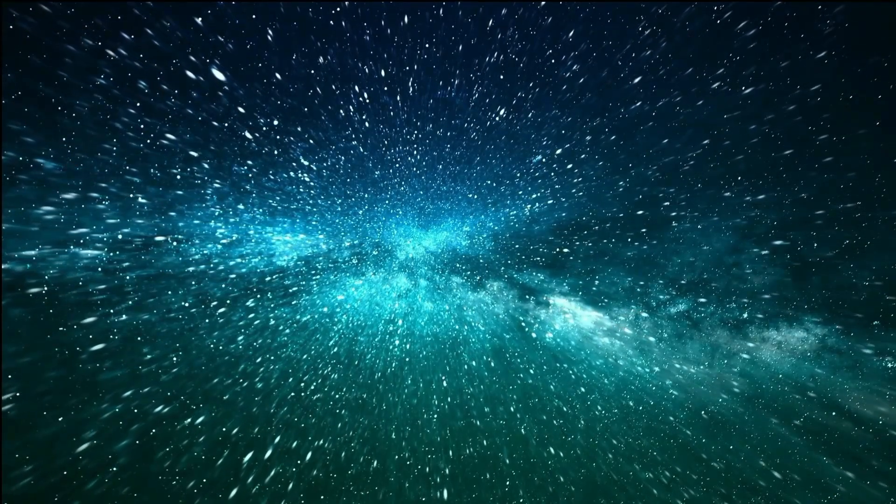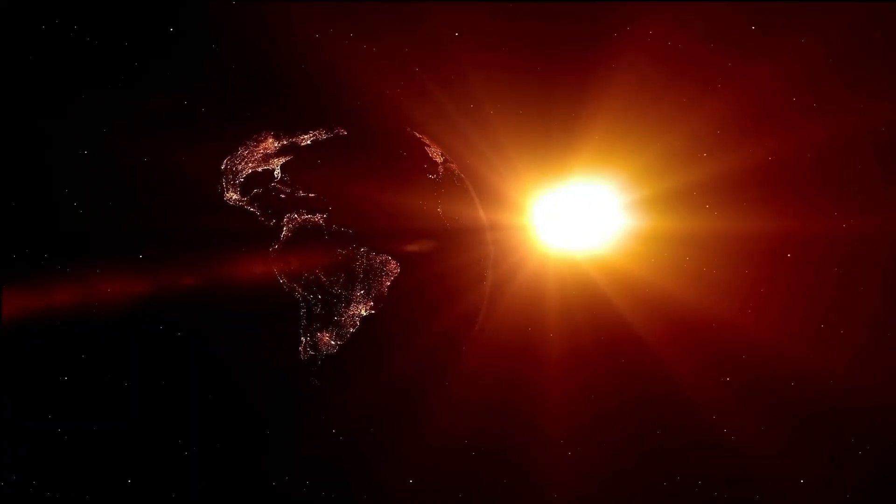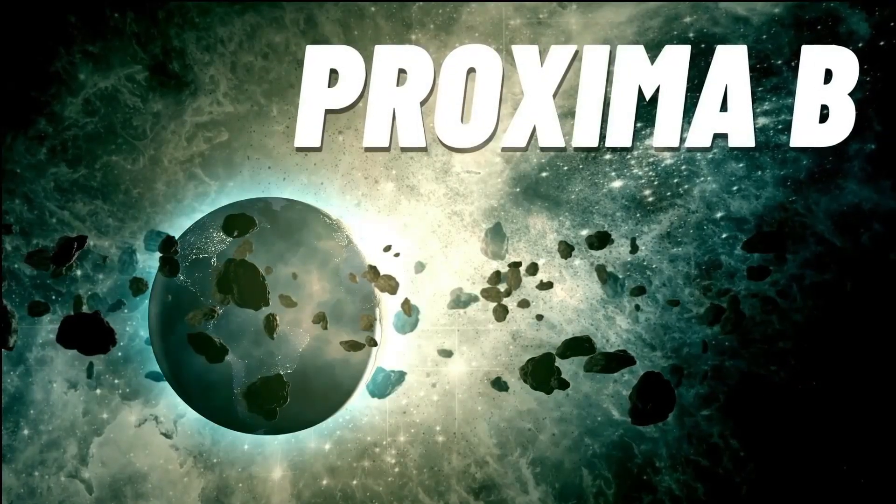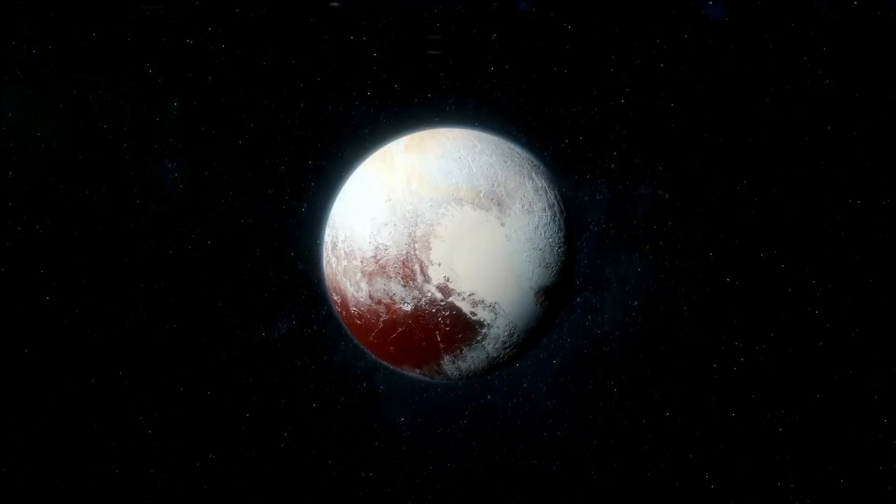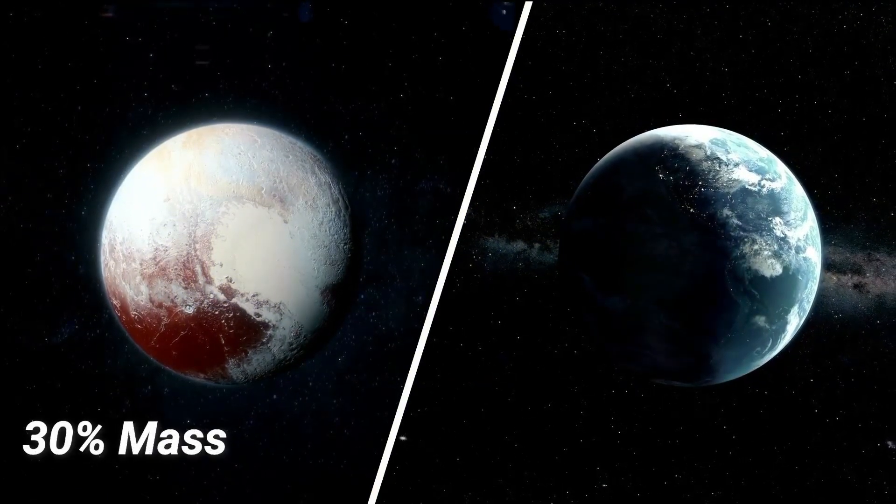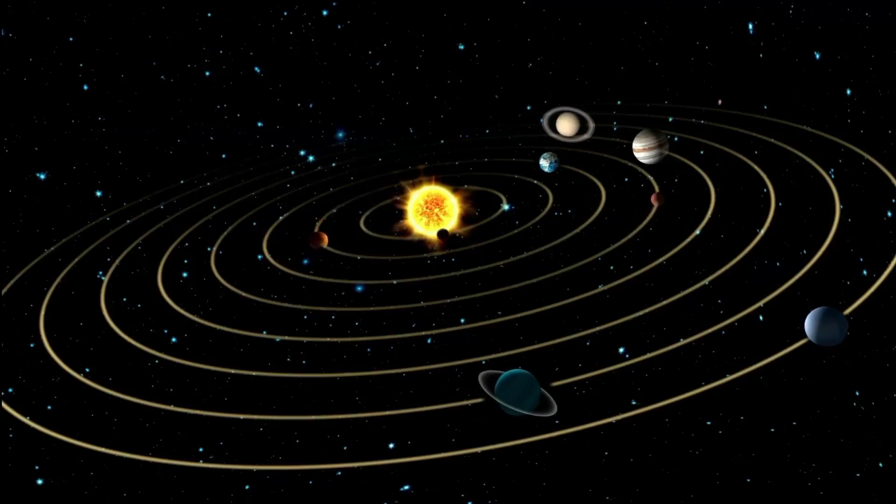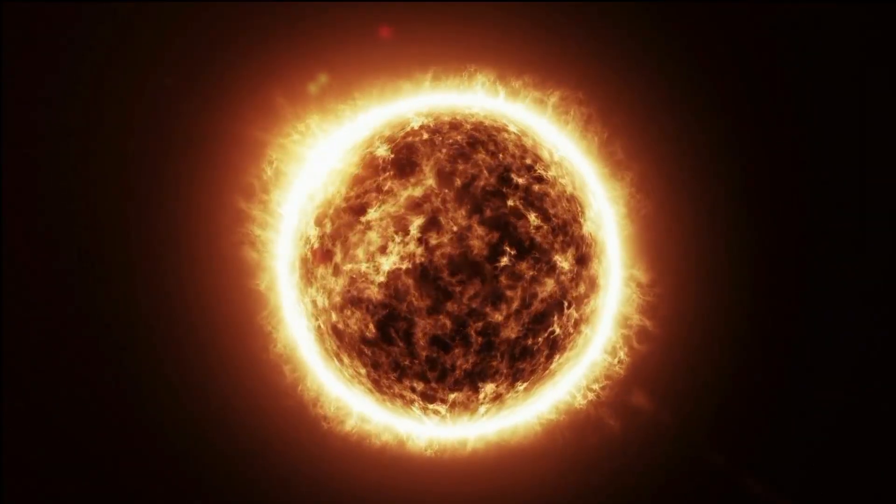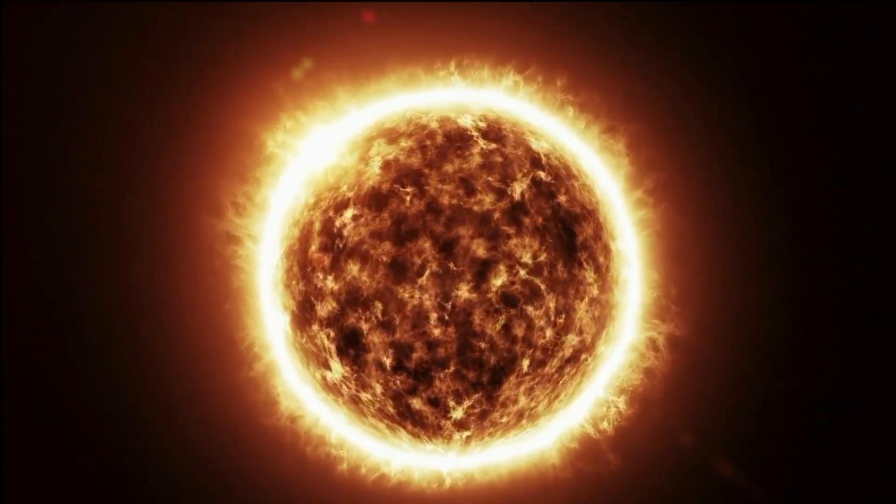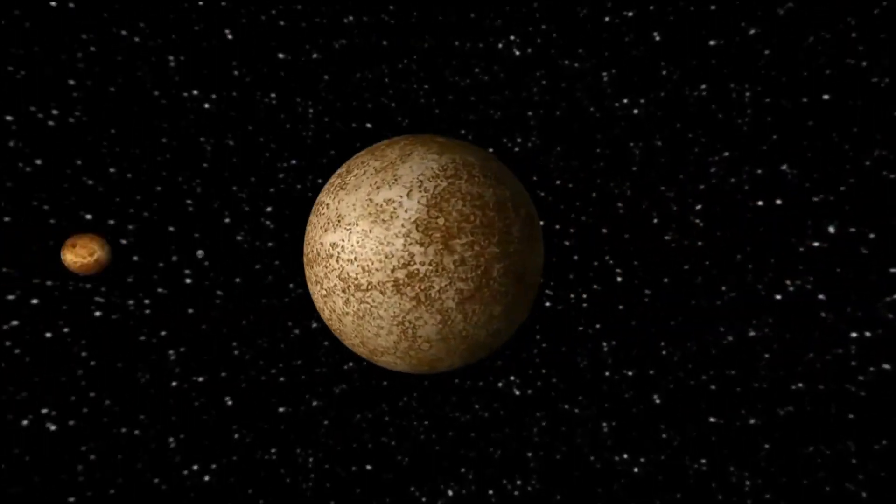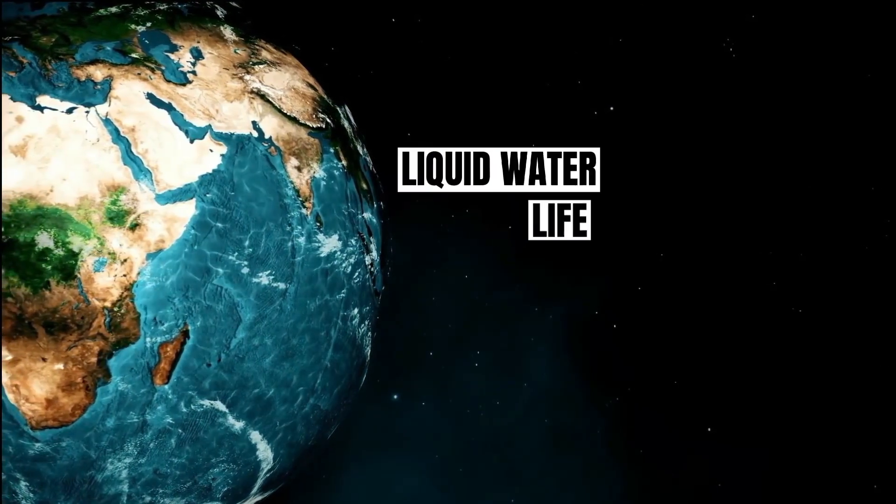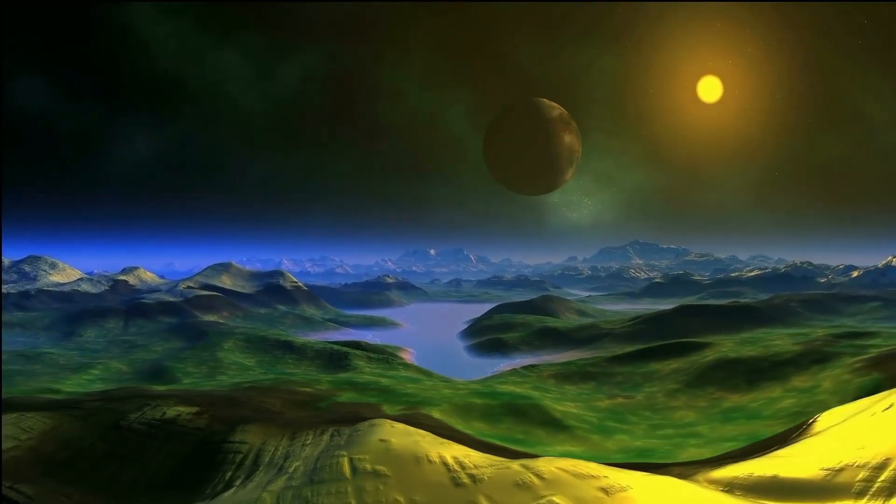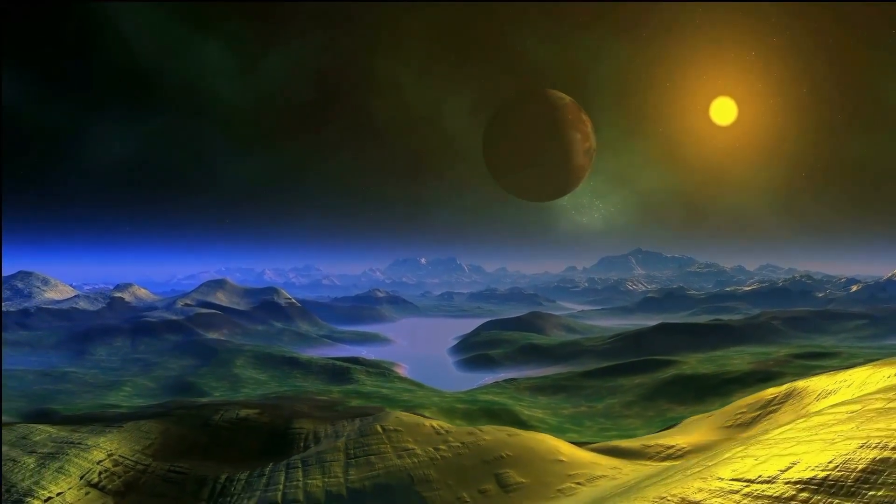Now, let's have a look at the very first exoplanet ever found in the Alpha Centauri system, which was Proxima b. It was discovered that the planet has an orbital period of 11.2 days and a minimum mass that is at least 30% higher than that of the Earth. If it were orbiting our Sun, this world would be a scorching zone. But since Proxima Centauri is only a red dwarf star, the planet Proxima b is located smack dab in the middle of the habitable zone. If this is the case, liquid water and perhaps life could exist there. Proxima b's Earth-like mass also suggests that it could be a rocky, terrestrial planet like our own.